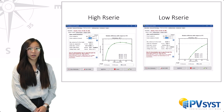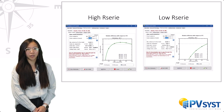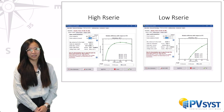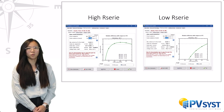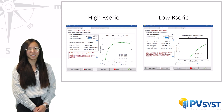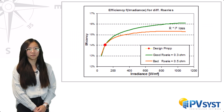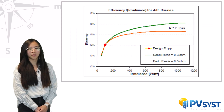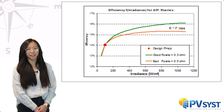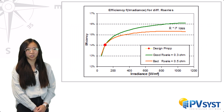Let us point out a strange behaviour. When the series resistance increases, which indicates a worse quality module, the low light efficiency actually increases. We propose here an intuitive explanation.